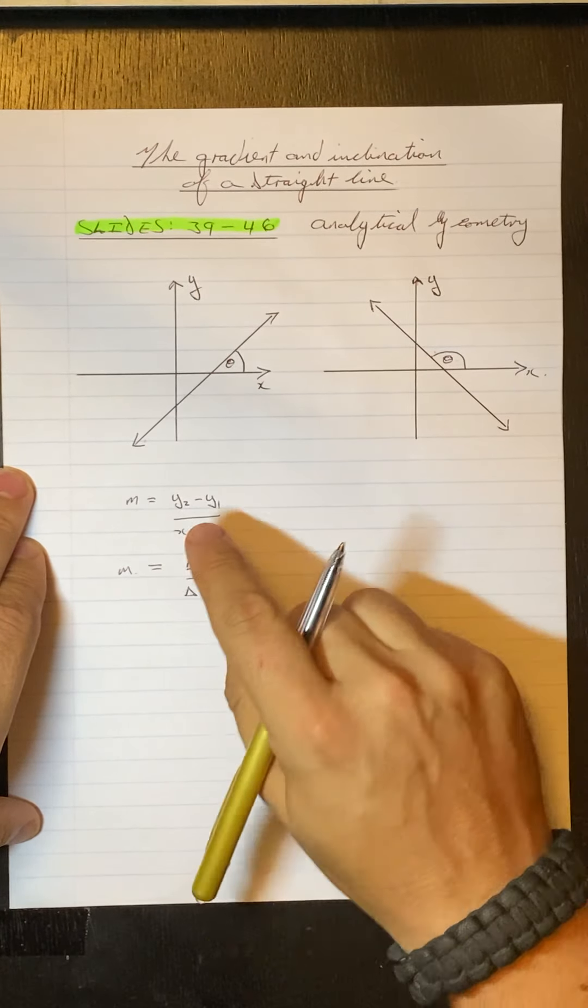So the gradient, AB, will be equal to y2 minus y1 over x2 minus x1. Now, because this is our first point, this will be x1, y1. Our second point, x2, y2.